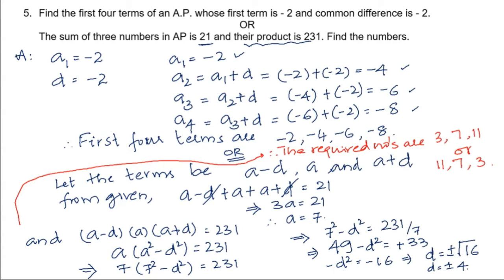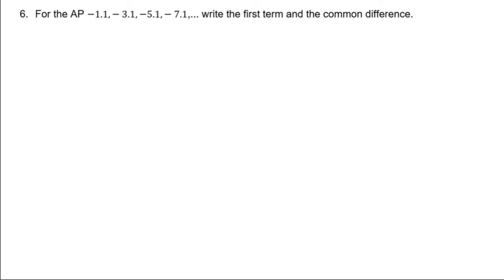Hello students, we were discussing the question paper and had discussed till question 5, which are one mark type. Let us move on with question number 6. Question number 6 is related to arithmetic progression. They have given: minus 1.1, minus 3.1, minus 5.1, minus 7.1, and so on. Write the first term and common difference.